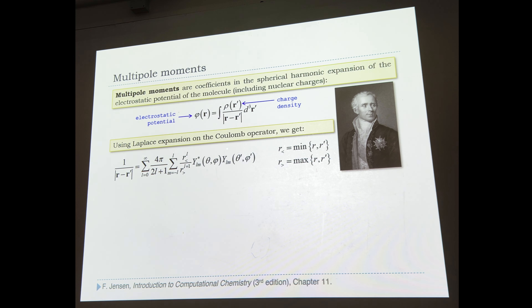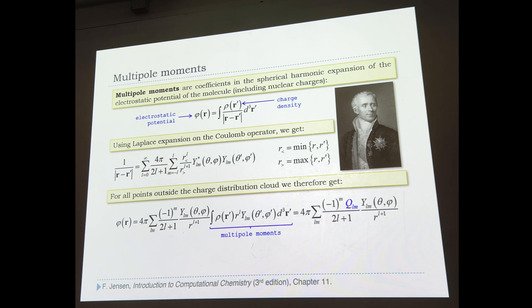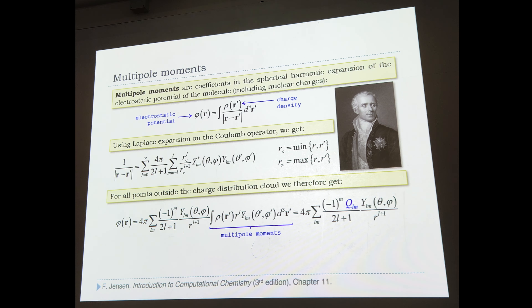Putting this giant expansion into the integral and rearranging, we see the distance and angles pertaining to the point at which we calculate the potential, and then the distance and angle pertaining to the charge cloud alone — which can be calculated as a property of just that particular charge distribution. These integrals, when made into numbers, are called multipole moments, and they enter the spherical harmonic expansion of the electrostatic potential. If we are outside the convex hull, at some distance, this multipole expansion is very convenient: we only need to store the coefficients of an otherwise known expansion.